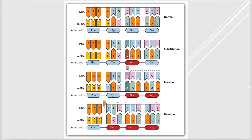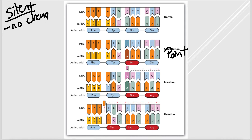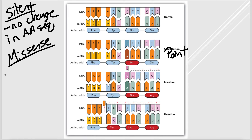There are several types of mutations. Substitutions, also known as point mutations, change one base to a different base. Silent mutations are point mutations with no change in the amino acid sequence. Missense mutations result in a change in the amino acid sequence, which may have no effect or could be very detrimental.